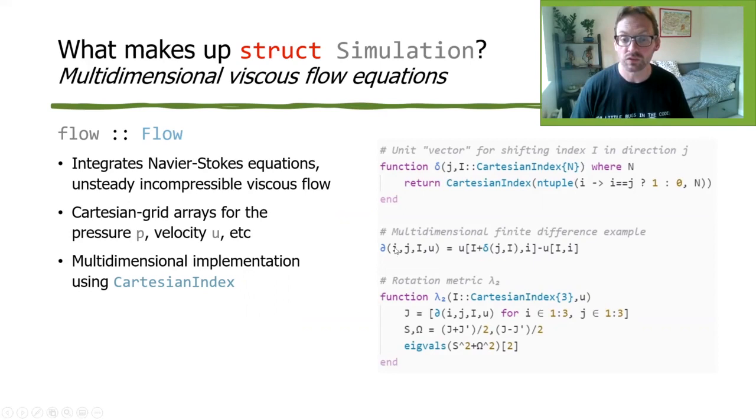So as an example of that, this little delta function, it basically is a step function. So it says, started from some Cartesian index, please move one direction over in x or y or z or whatever. And we can use that to define things like a very simple finite difference formula. So this is the velocity u at some Cartesian index capital I, and the component of the velocity vector is given by lowercase i. And then for the finite difference, we just take the value one step over in j. We subtract the value at the original place, and that's your velocity derivative.